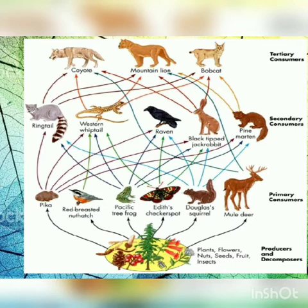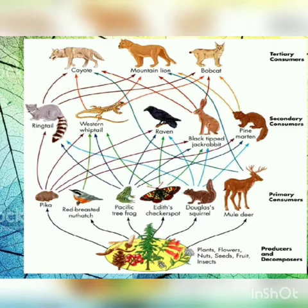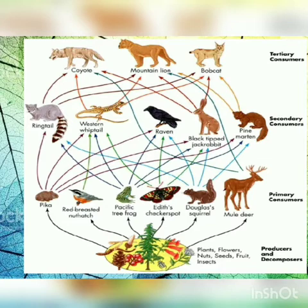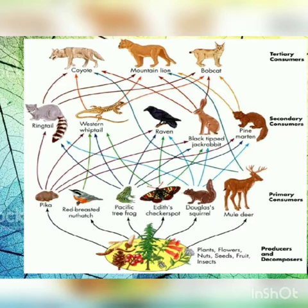The primary consumers include pika, red-breasted robin, Pacific tree frog, checkerspot butterfly, squirrel, and mule deer. Let's take the Pacific tree frog as an example. An arrow coming out from the producer level points toward the frog. It is very important when studying a food web to pay attention to which organism an arrow comes from and which organism it is pointing at.